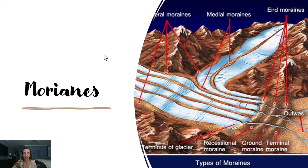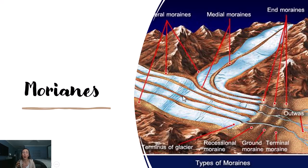This is moraine material. Moraines are ridges of sediment seen at the ends, in the middle, and along the sides of glaciers. Along the sides we have lateral moraines, which form as rock material falls from the sides as it gets eroded and collects there, or gets shoved off to the side. Where two lateral moraines come together, you form medial moraines, which run in the center. These medial moraines would have merged somewhere further up valley where a couple of glaciers joined.